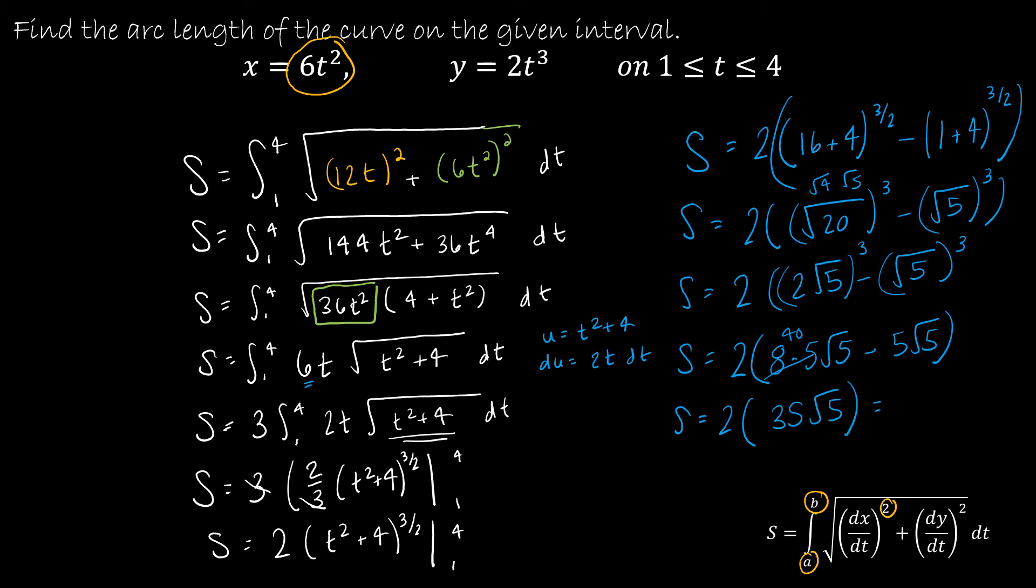So I have 35√5, which is 70√5, which is about 156.525.